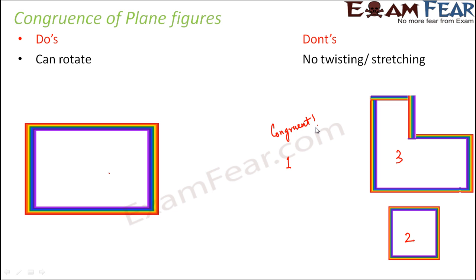So figure number 1 is congruent with the given figure, and in order to find its congruence what we needed to do was rotate the figure — and that is allowed. Why is that allowed? That's because we are not bothering the shape or the size. When we rotate a figure we are not altering its shape or its size, and in congruence the two things that matter are shape and size. So rotation is allowed. Now let's see the don'ts — we are not allowed to twist a figure, we are not allowed to stretch a figure, we are not allowed to bend a figure.